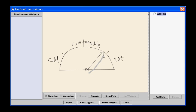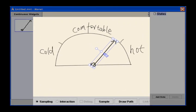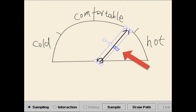The designer then selects the strokes representing the needle. This creates a continuous widget. Its thumbnail is shown in the left panel. The blue cursor is called the user cursor, representing the end user's pointing device, such as a mouse or a pen.